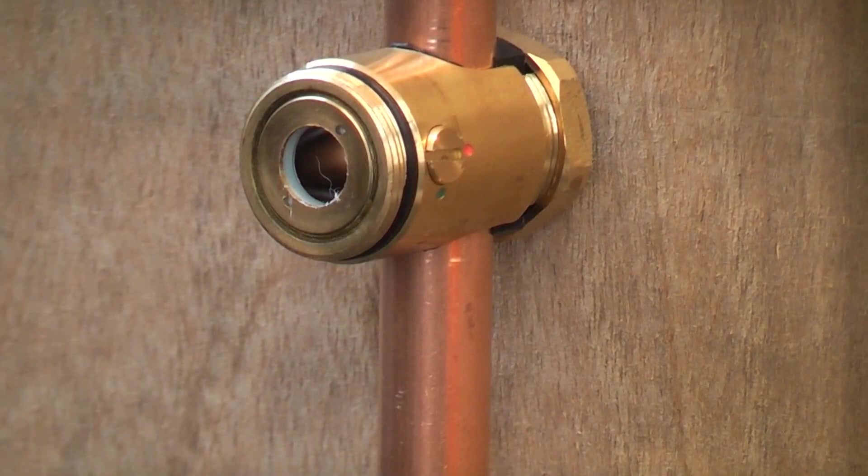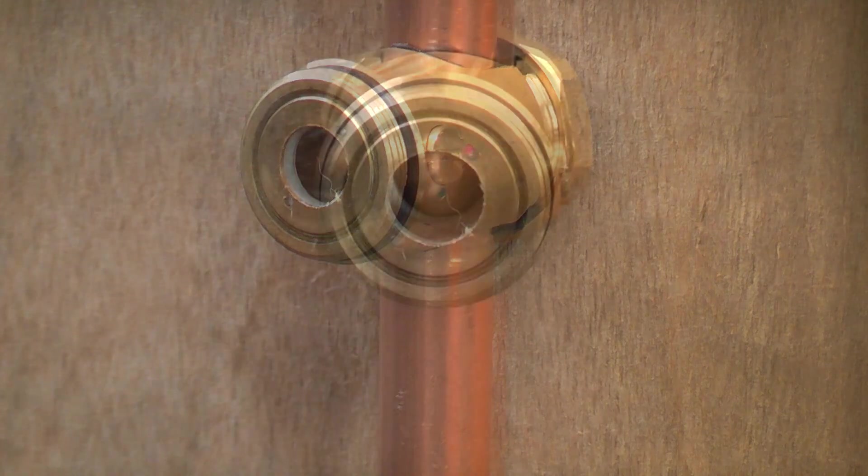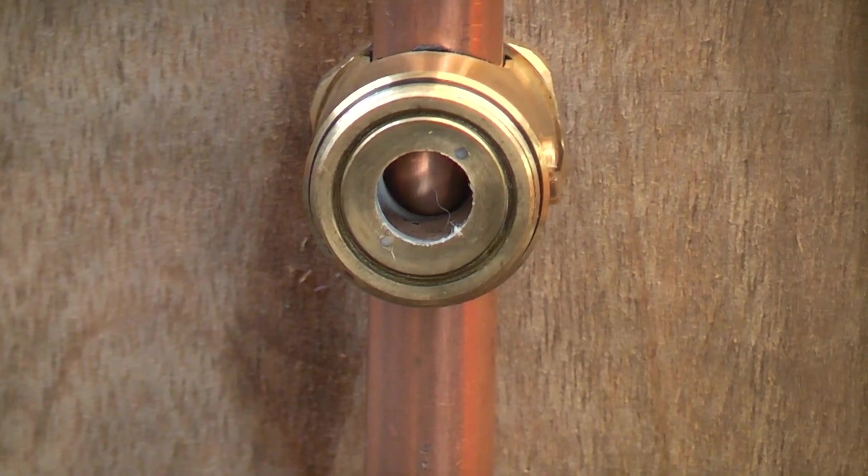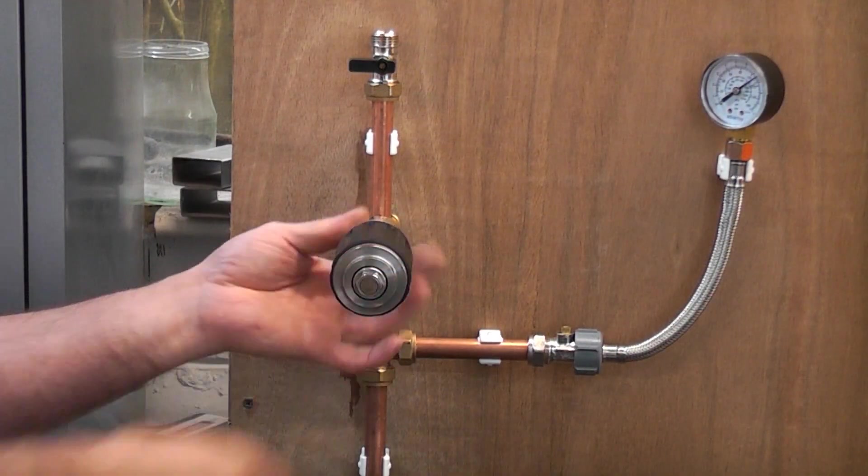You now need to check that the valve is in the open position so that the slot is pointing to the red dot. If you take a look in the fitting you can actually see that we've got a hole all the way through to the pipe. I'm now going to take the cutter tool and screw that onto the valve.